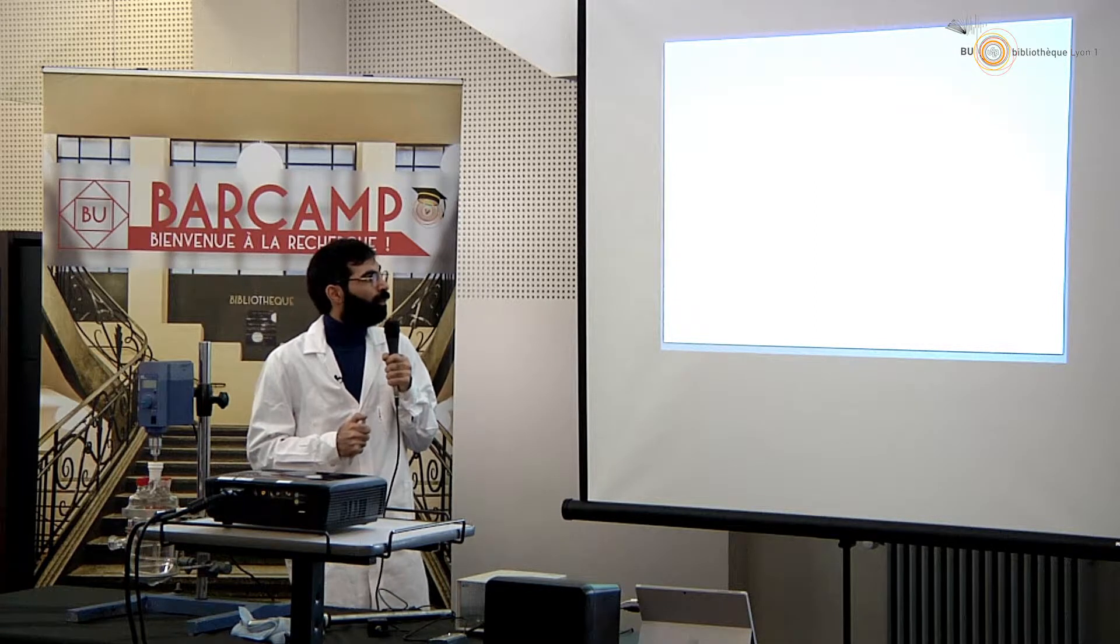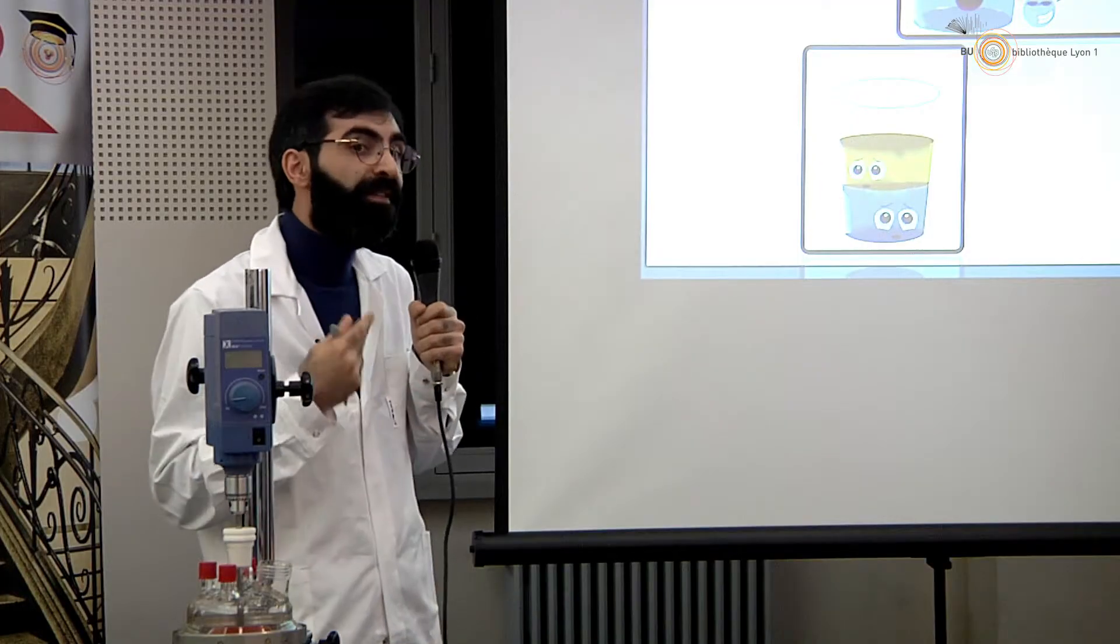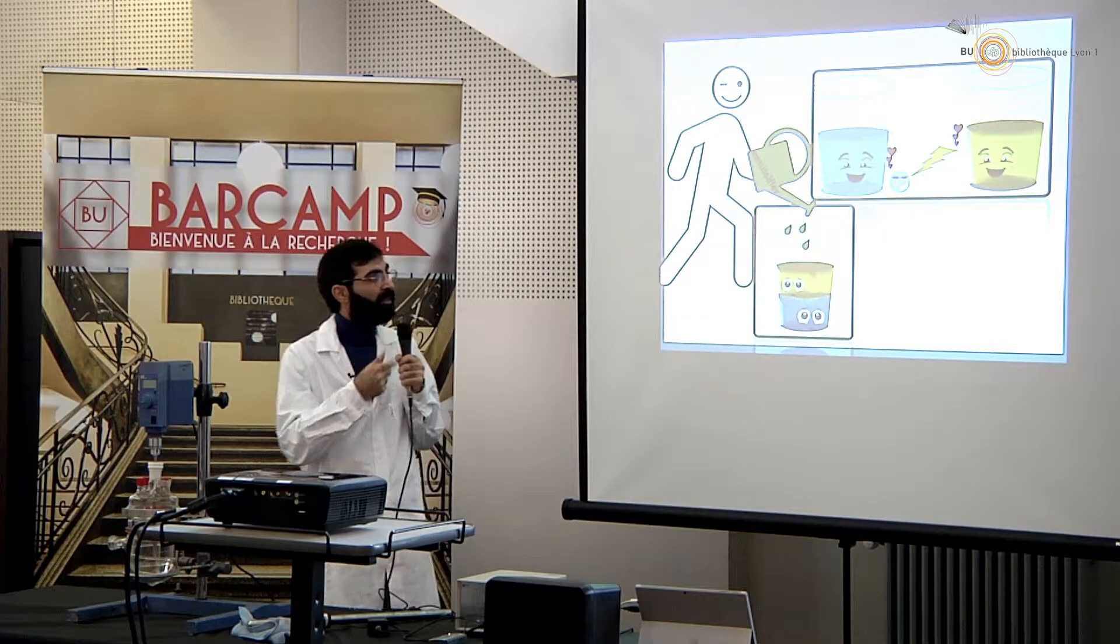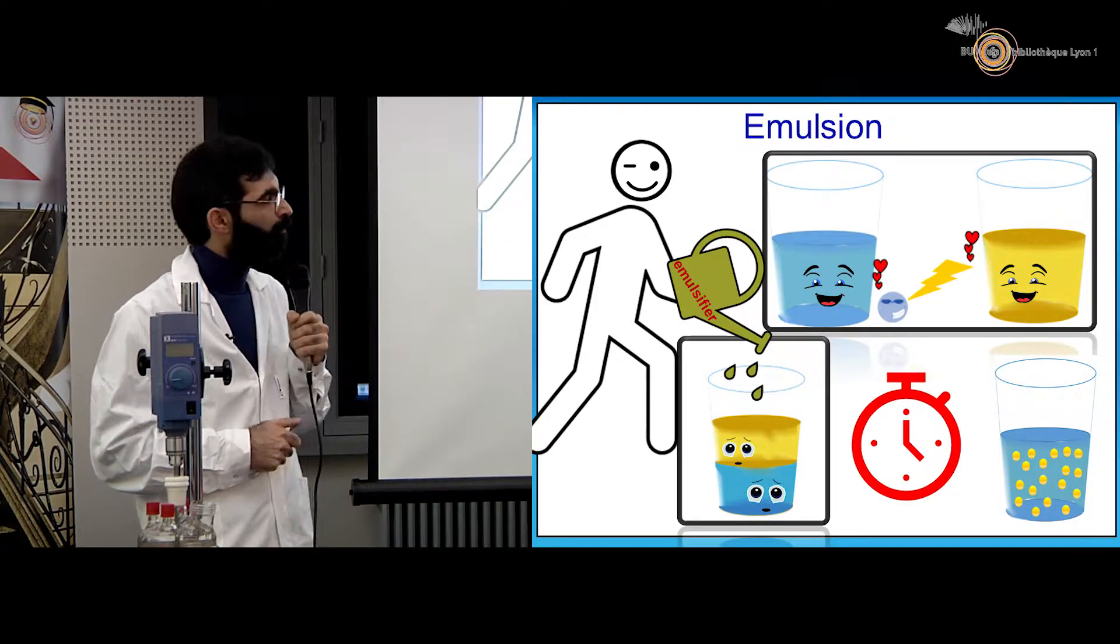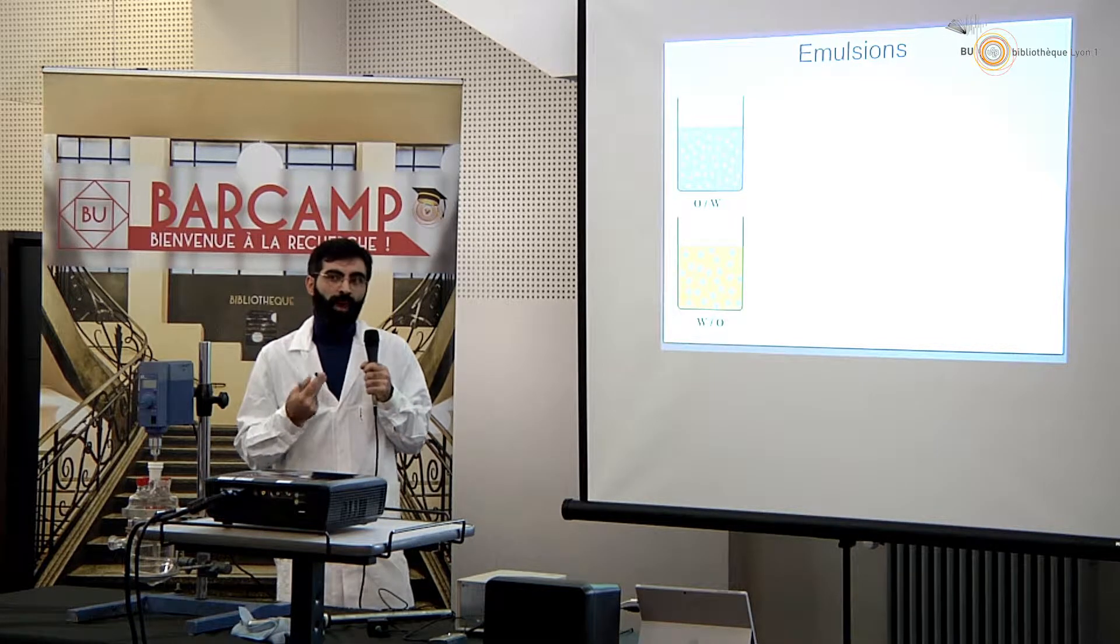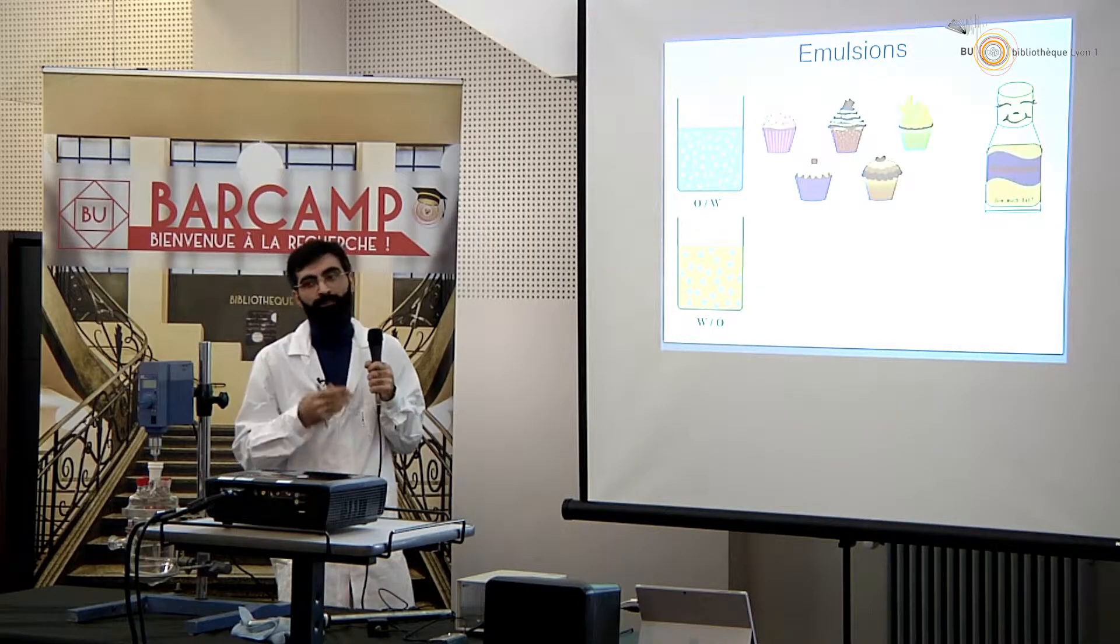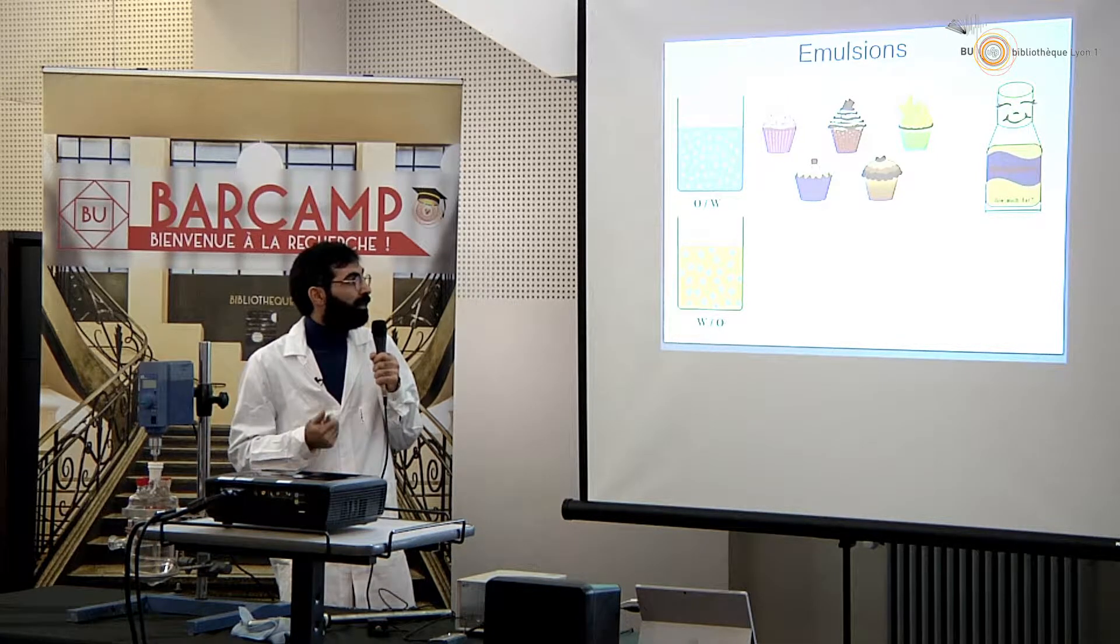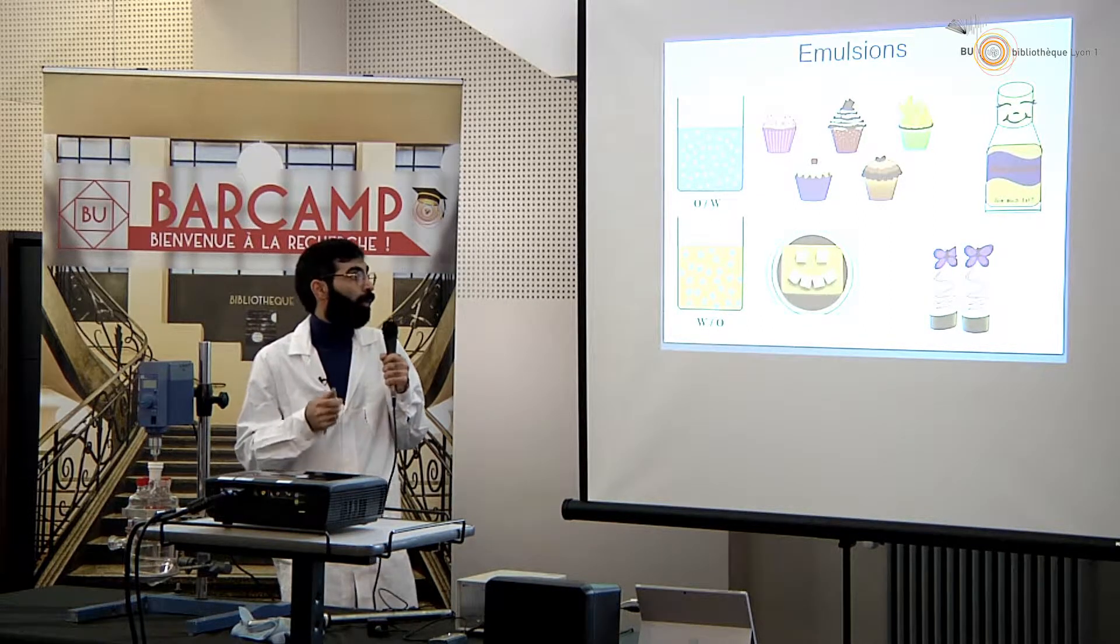So what should we do to make them mix? We should make an interface between them. It is emulsifier who will make this interface between water and oil and after mixing we will have emulsion. Talking about emulsion, I should say that we have two kinds of emulsions: oil in water or water in oil. For the first group the popular products are ice cream and mayonnaise. For the second group we can talk about margarine and most kinds of creams.